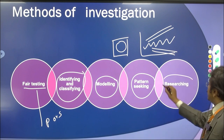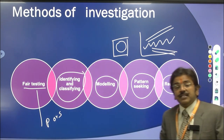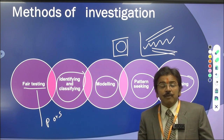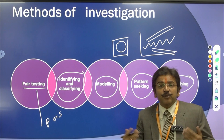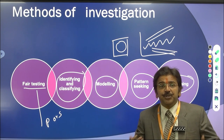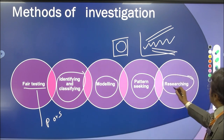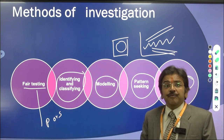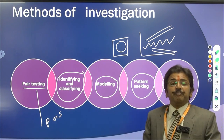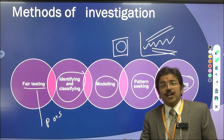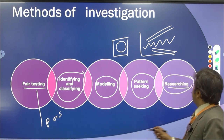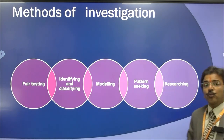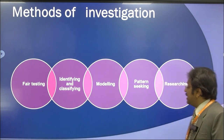The last method is researching. Researching means sometimes the study has been done previously — the work has been done in the past, but now you are going to do the same work from a different angle and different perception. Researching is important because sometimes we have to prove the reliability and accuracy of a past study. These are the methods by which we do our statistical investigation.